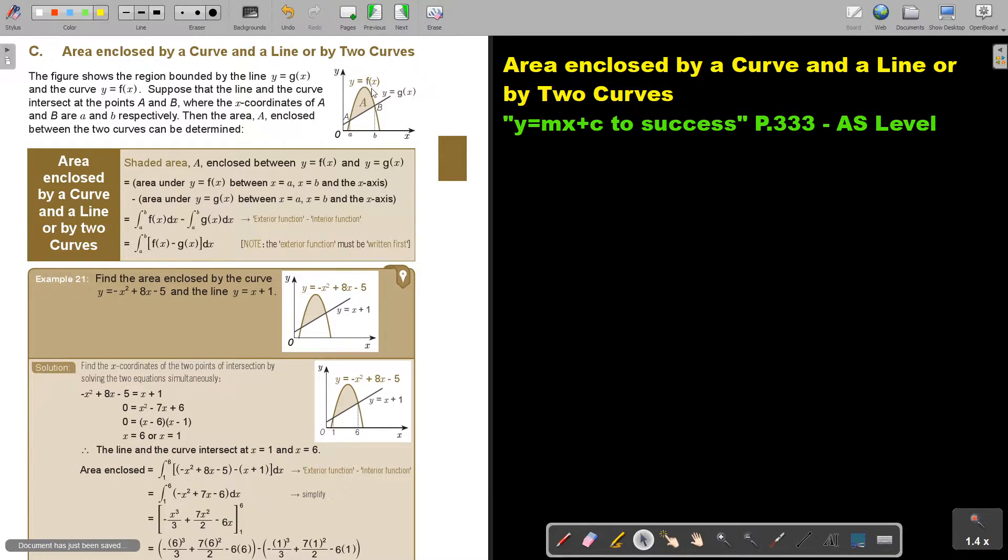So it's the exterior, that top function, minus the interior function. Now, the exterior function must be written first, the top one. Let's look at an example.